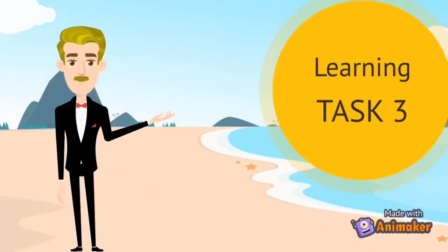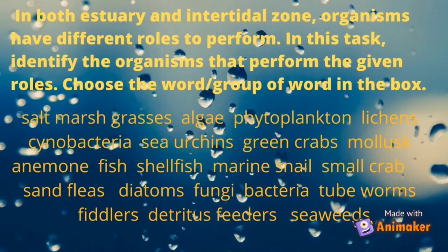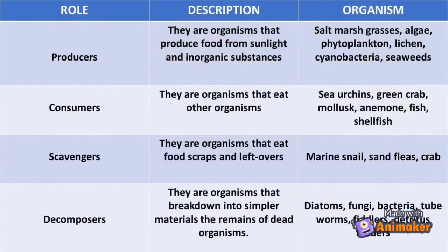Let's do learning task number three. In both estuary and intertidal zones, organisms have different roles to perform. Identify the organisms that perform the given roles. Choose the word or group of words in the box. Producers are organisms that produce food from sunlight and inorganic substances. Examples: salt marsh grasses, algae, phytoplankton, lichen, cyanobacteria, and sediments.